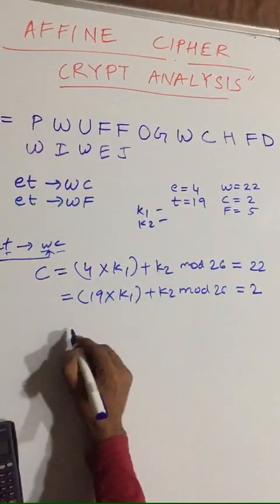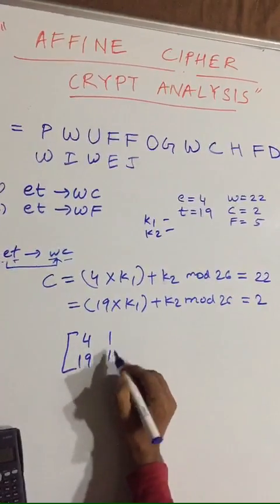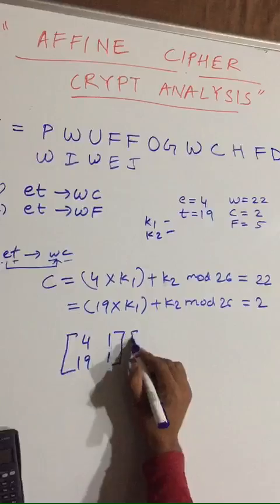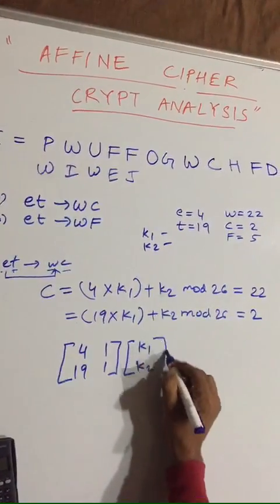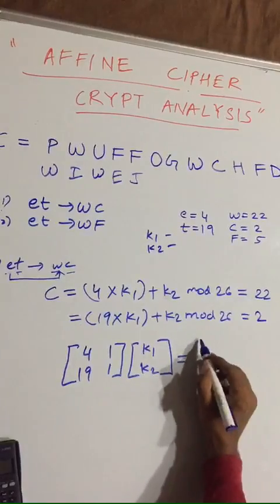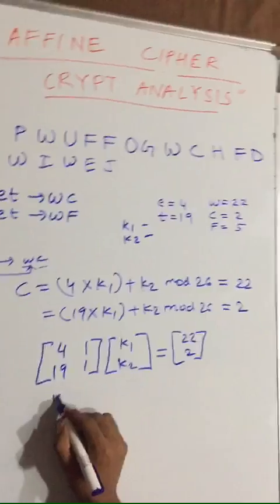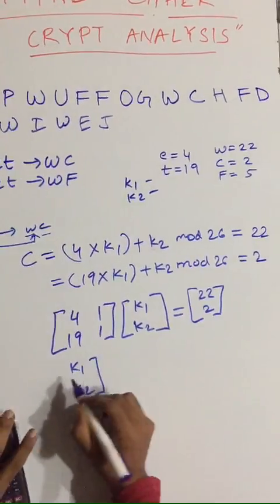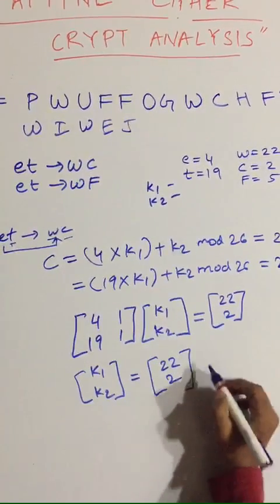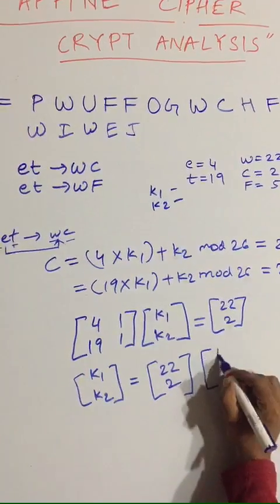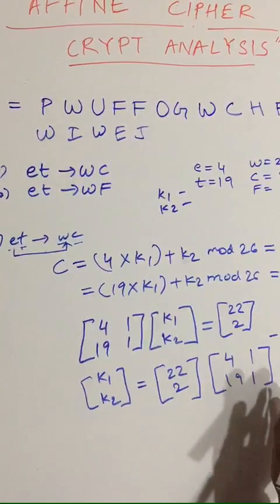Now write this in matrix form: the matrix [4, 19; 1, 1] multiplied by [k1; k2] equals [22; 2]. So k1 and k2 will be equal to the inverse of [4, 19; 1, 1] multiplied by [22; 2].